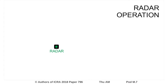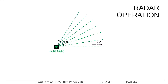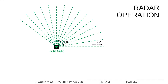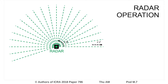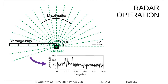Here we view the radar from a bird's eye view. The FMCW scanning radar gathers power measurements along each azimuth A, shown by the green dotted line, for a series of range bins R as it rotates. For each azimuth,